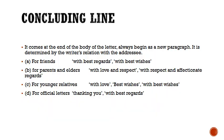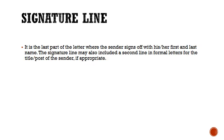Concluding lines. The concluding lines come at the end of the body of the letter as a new paragraph. They are determined by the writer's relation with the addressee. For friends, you can write 'With regards.' For parents, 'With love and respect.' For young relatives, 'With love,' 'Best wishes,' or 'With best wishes.' For official letters, you should write 'Thanking you' or 'With good regards.' Signature line. This is the last part of the letter, where the sender signs off with their first and last name. In formal letters, the signature line may also include a second line for the title or post of the sender.